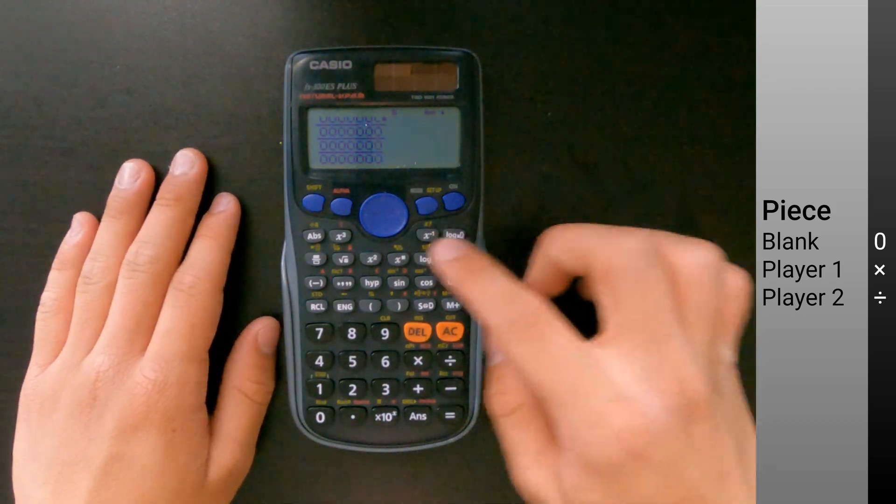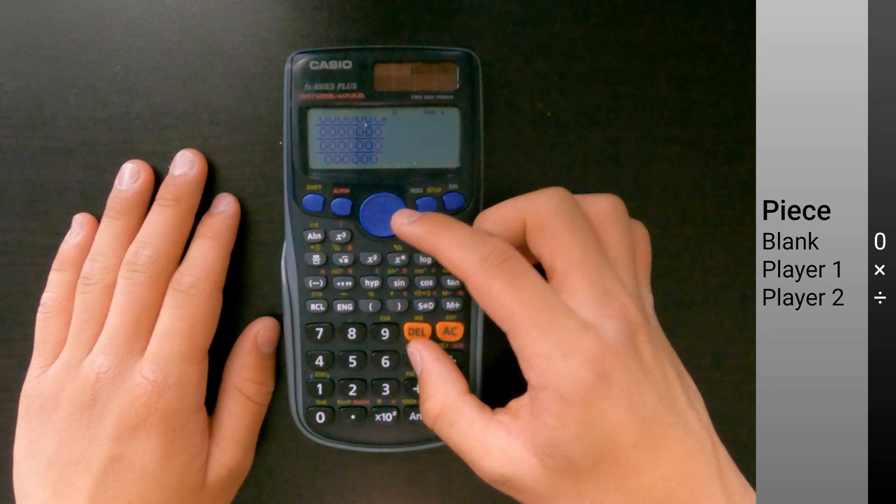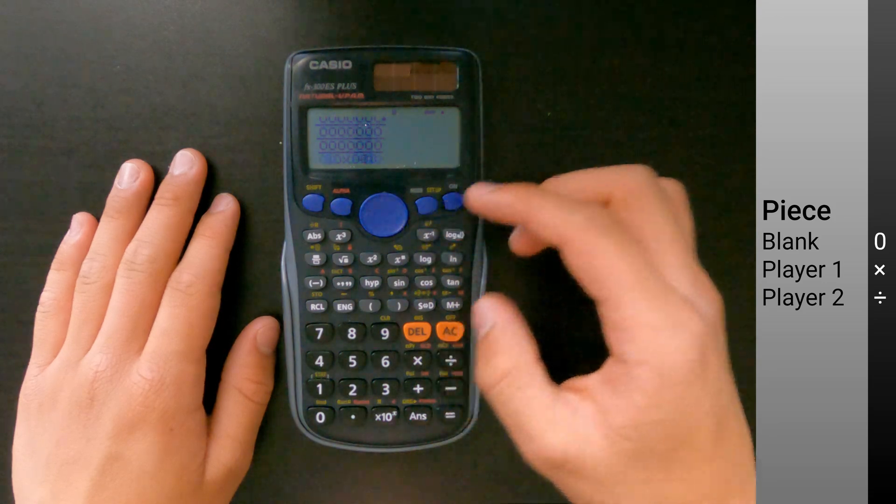Once you have set up the board, go to a space, press delete and replace with an x for player one or divide for player two.